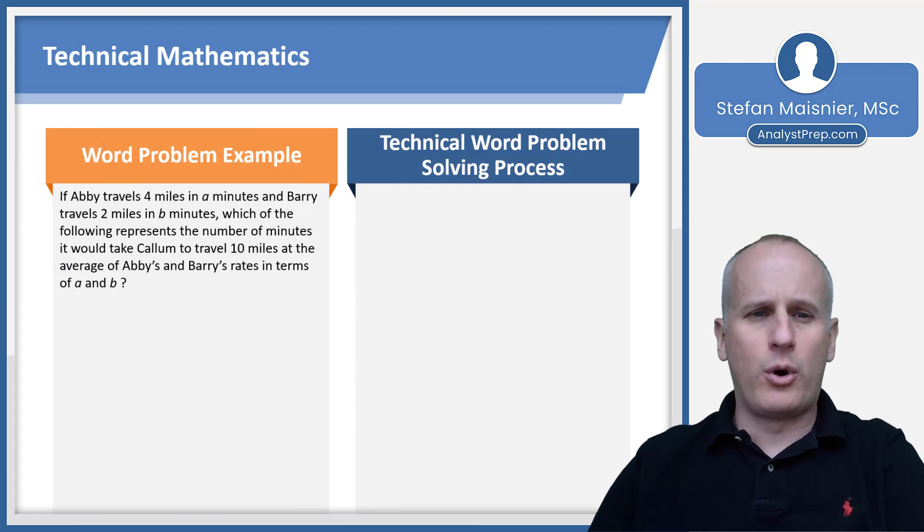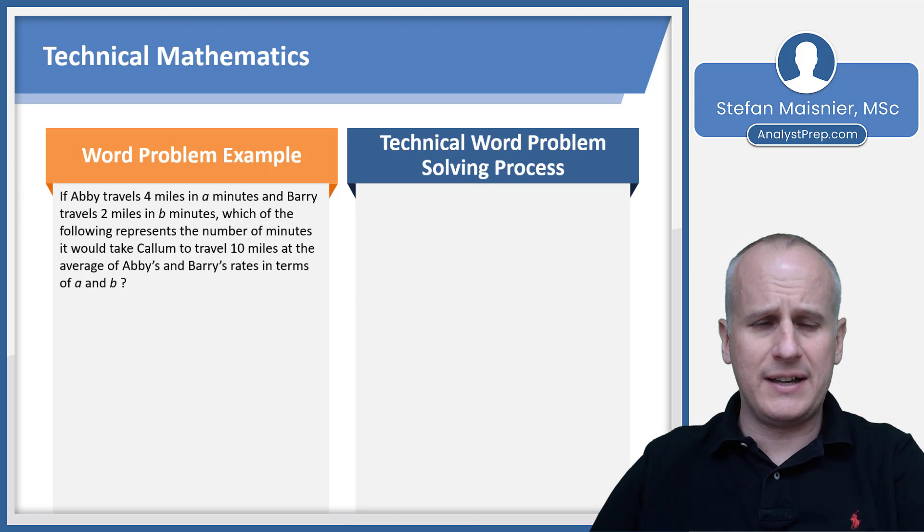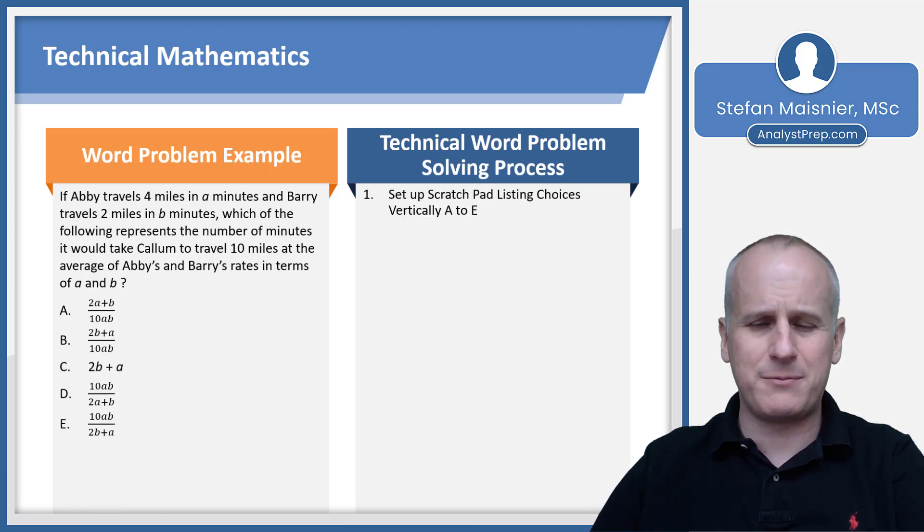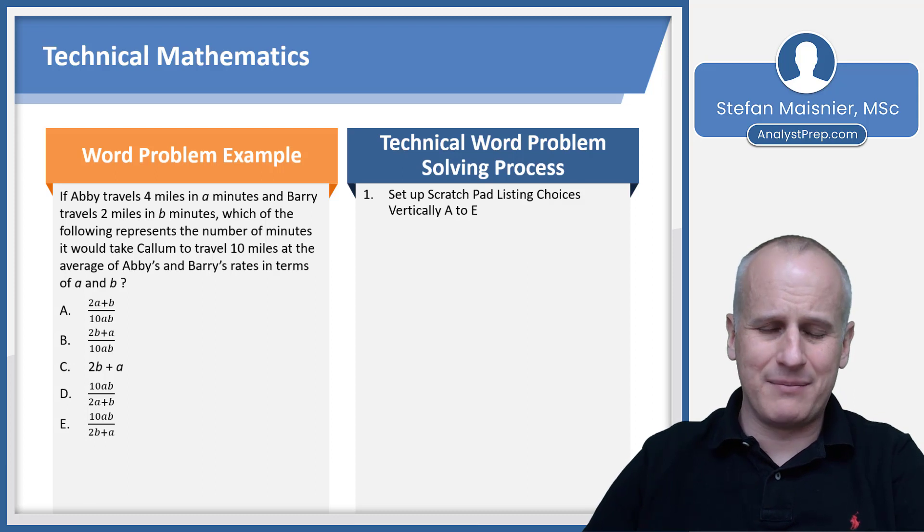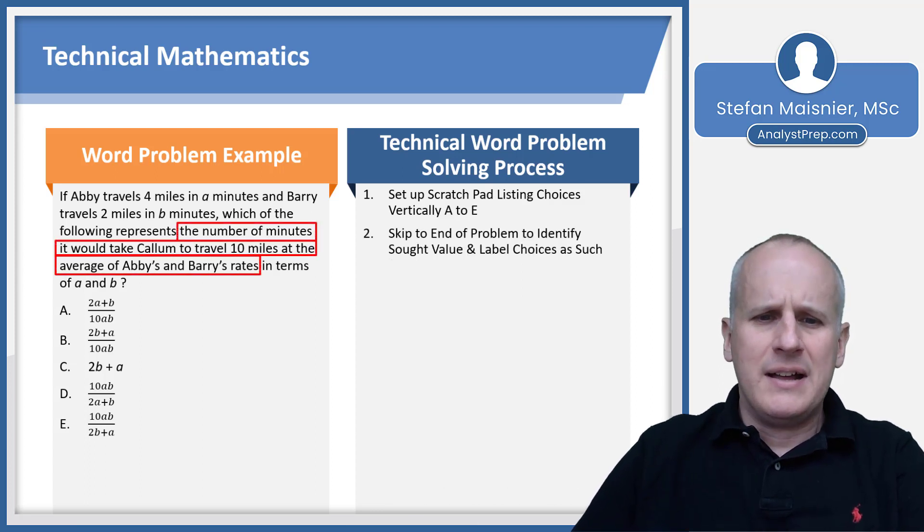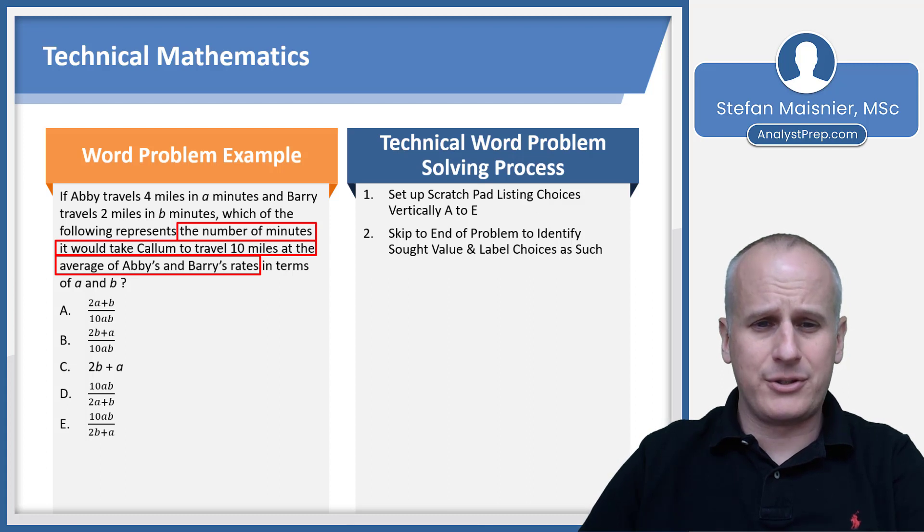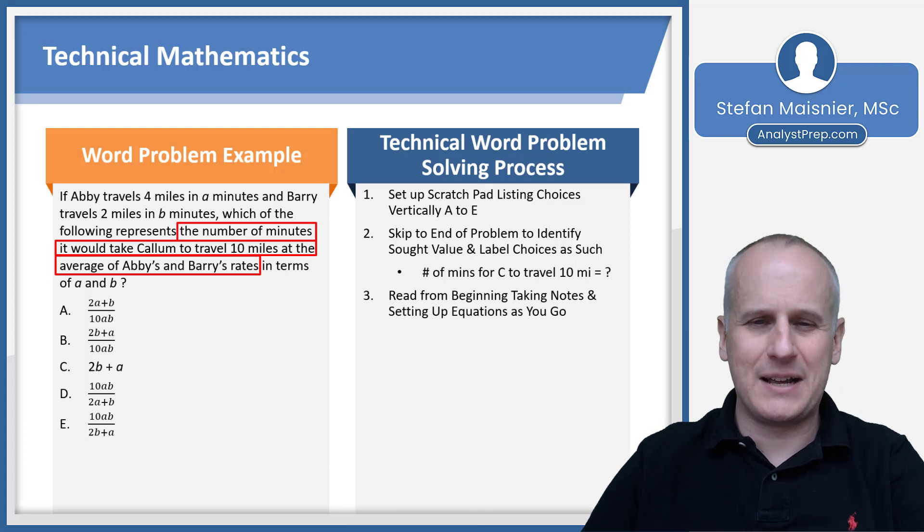Let's take a look at a word problem that you could potentially approach using a technical math method. As always, we're going to set up the scratch pad first listing the choices vertically A through E. In this case, I would not recommend writing them out because they're just overly complex expressions. Then, as always, we're going to skip to the end of the problem to identify the sought value and label those choices. We can read: the number of minutes it would take column to travel 10 miles at the average of Abby's and Barry's rates in terms of A and B. Then we'd read from the beginning, taking notes and setting up equations as we go.